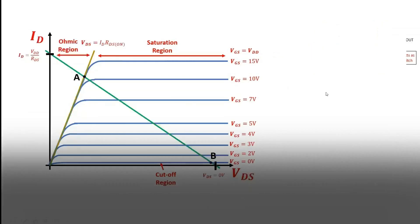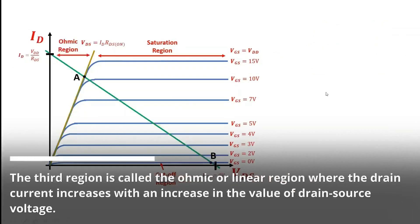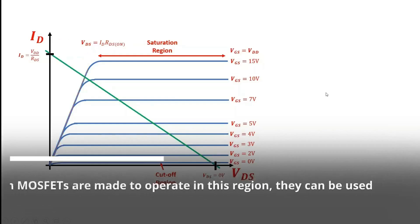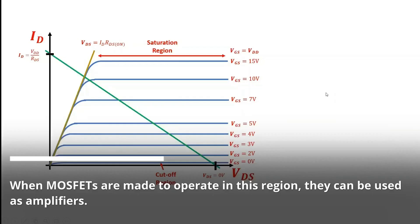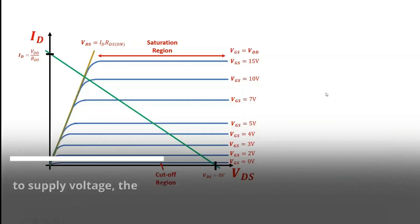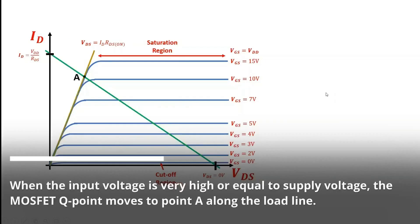The third region is called the ohmic or linear region, where the drain current increases with an increase in the value of drain-source voltage. When MOSFETs are made to operate in this region, they can be used as amplifiers. When the input voltage is very high or equal to the supply voltage, the MOSFET Q point moves to point A along the load line.